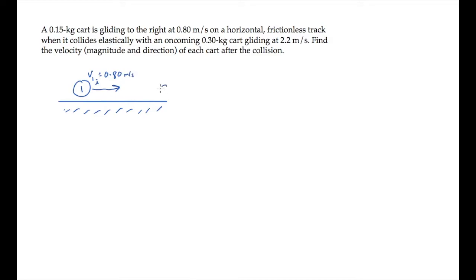The second cart is gliding in the opposite direction with a speed of 2.2 meters per second, so we'll call its velocity negative 2.2 meters per second, which means that the positive direction is to the right. They collide elastically and we're asked to find their velocities, magnitude, and direction after the collision.